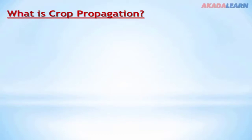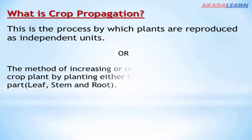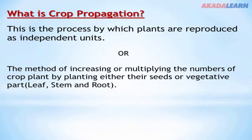What is crop propagation? Looking at the words crop and propagation, we know what a crop is. Propagation simply means to multiply, to spread, or to reproduce something. With this, we can say that crop propagation is a process by which plants are reproduced as independent units, or a method of increasing or multiplying the numbers of crop plants.